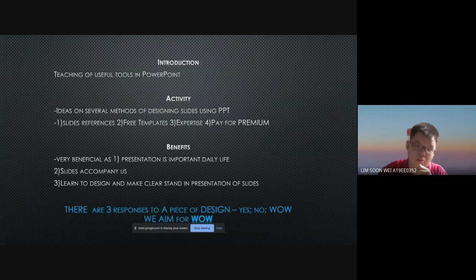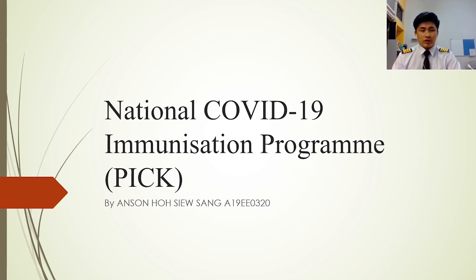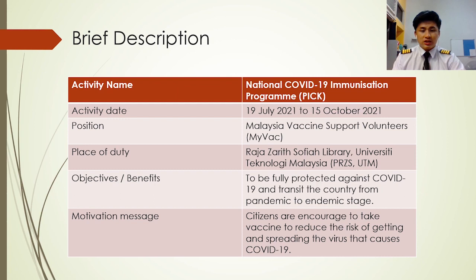Hello, my name is Anson Jose Sang. My activity name is National COVID-19 Immunization Program. The activity date is starting July 2021 to 15 October 2021. My position is Malaysia Vaccine Support Volunteer. The benefit of the activity is to be fully protected against COVID-19 and help transition the country from pandemic stage. My motivation message is: citizens are encouraged to take the vaccine to reduce the risk of getting and spreading the virus that causes COVID-19.